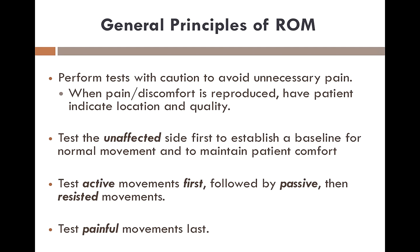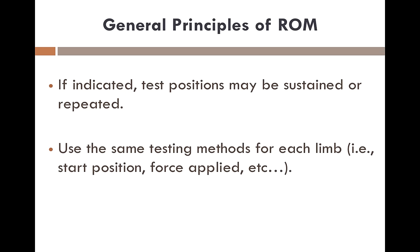Test the unaffected side first to establish a baseline for normal movement and to maintain patient comfort. Test active movements first, followed by passive movements, then resisted movements. Test painful movements last. When indicated, test positions may be sustained or repeated. Use the same testing methods for each limb — for example, the same starting position and the same amount of force applied.